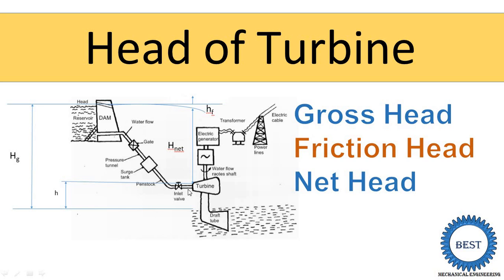Hi, Professor Isal Taylor. Welcome to my YouTube channel. In this video, I teach you the head of turbines. It is useful for studying the hydro power plant as well as hydraulic turbines. In the hydro power plant there are three different types of head: gross head, friction head, and net head. Before going to these different types of head, I will simply explain what head means — it is a difference or height between two places.